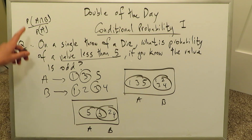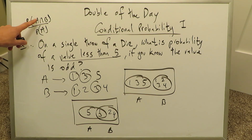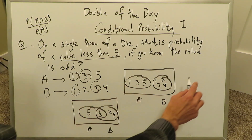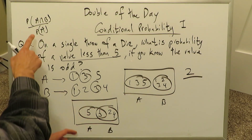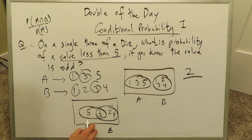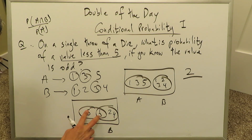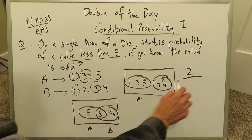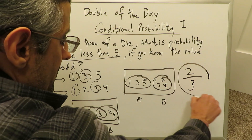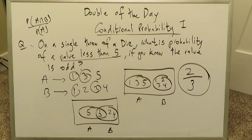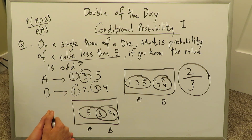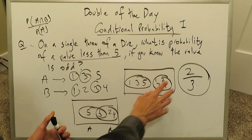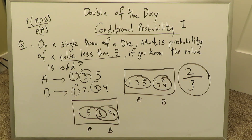Applying the formula: probability of intersection of A and B has 2 numbers, so we put 2 over the probability of A. The A bubble has a total of 3 numbers. So the conditional probability is 2 over 3. If you know the value is going to be odd and you're looking for a number less than 5, your probability for that event occurring is 2 over 3.